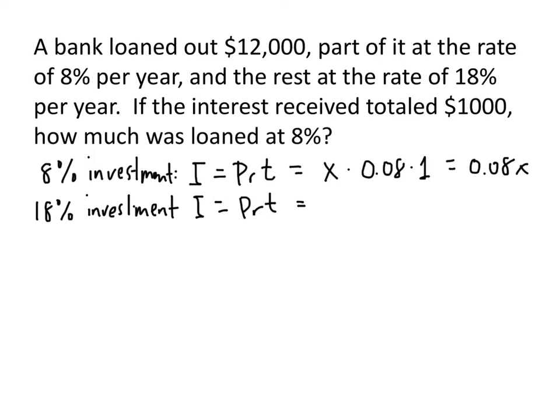What about the other investment? If we invested x dollars at 8% interest and we have a total of $12,000, then the amount invested at 18% is going to be 12,000 minus x.